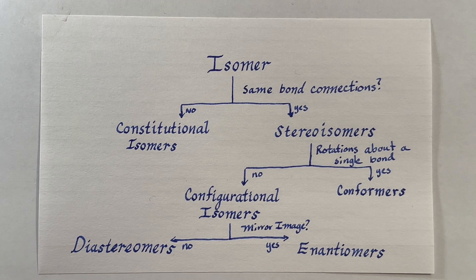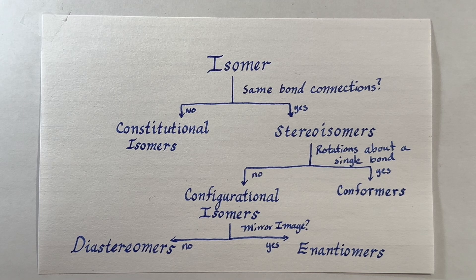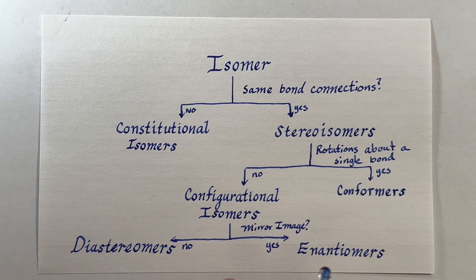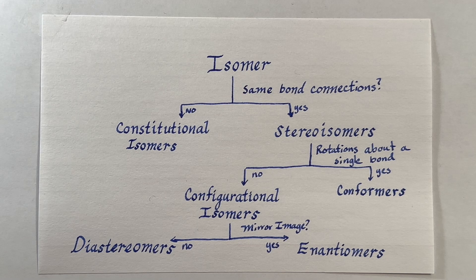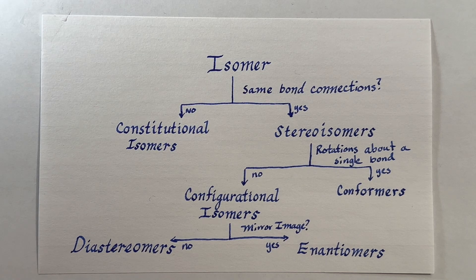Cis and trans isomers have different properties but they are not mirror images of each other, so they are diastereomers. In the next few videos we will talk about the different kinds of isomers and unpack them a bit. We'll also go over how to visualize these isomers and keep track of the configurations or conformations, so that we can understand isomerism that much better. Thank you for watching this introduction to the isomerism playlist and we'll see you in the next video.